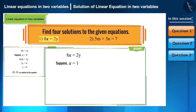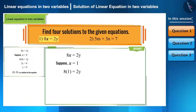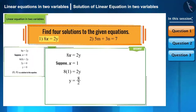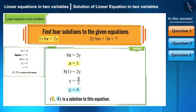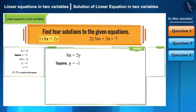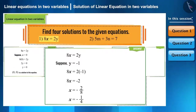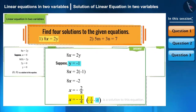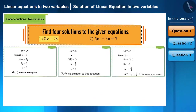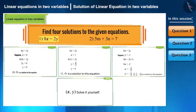Now let's take x as 1. Placing x as 1 in the equation 8x = 2y gives a linear equation in one variable, and solving it we get y as 4. So (1, 4) is another solution. Now considering y as minus 1, the corresponding value of x is minus 1 by 4, hence (-1/4, -1) is another solution. Find the fourth solution by yourself — you can pause the video.